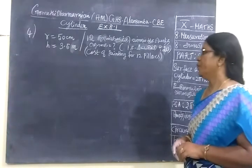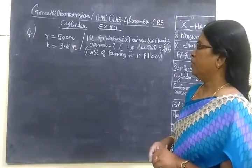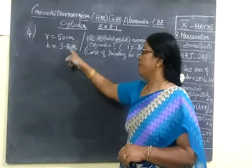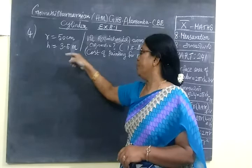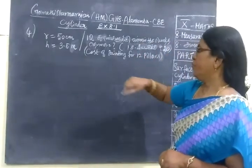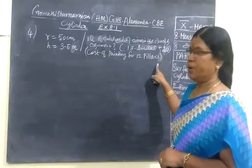Now we see part 241, fourth question. Radius is given as 50 cm, height is equal to 3.5 m. We have to find the total cost of painting for 12 pillars.